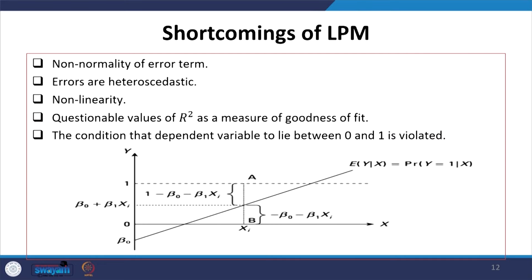The shortcomings of LPM: the distribution considered is not normal because it follows a Bernoulli distribution with 1 and 0, so errors are not estimated to be zero — errors are basically heteroscedastic. If the distribution is not normal, the error distribution and whether it has homoscedasticity or heteroscedasticity is in question. Nonlinearity is also identified since the data does not follow a linear pattern.